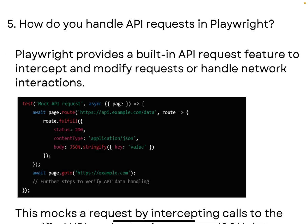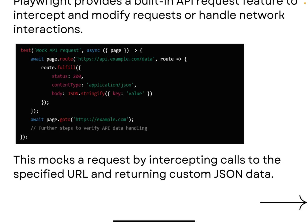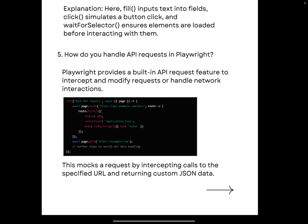The next question is: how do you handle API requests in Playwright? Playwright provides a built-in API request feature to intercept and modify requests or handle network interactions. In the code example shown, we use `.fulfill()` and provide a status code, content type, body JSON, etc. This mocks a request by intercepting calls to a specified URL and returning custom JSON data — that's how you can answer this question.